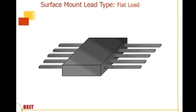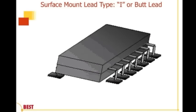Then we have flat-leaded components. As the cartoon shows, these are flat, come right out of the body, with no component bends. Then there are butt leads that come out and then down, with no foot, heel, or toe associated with them.